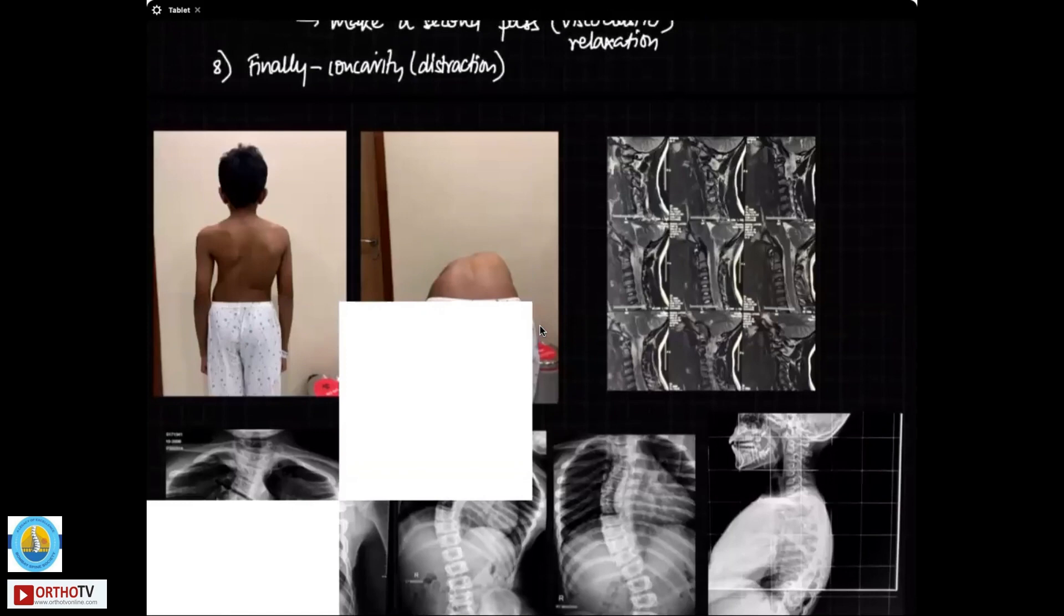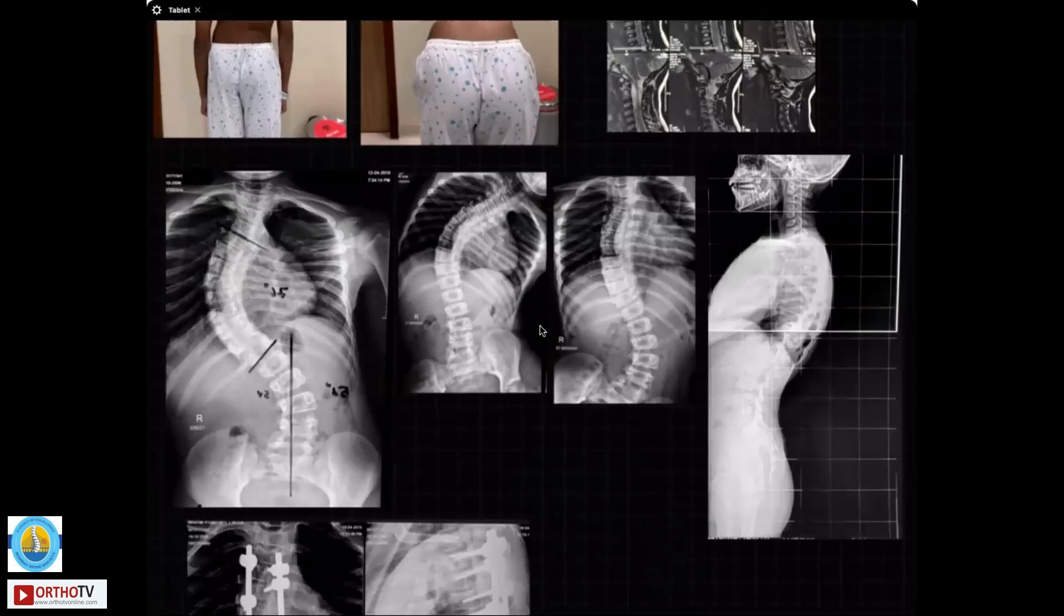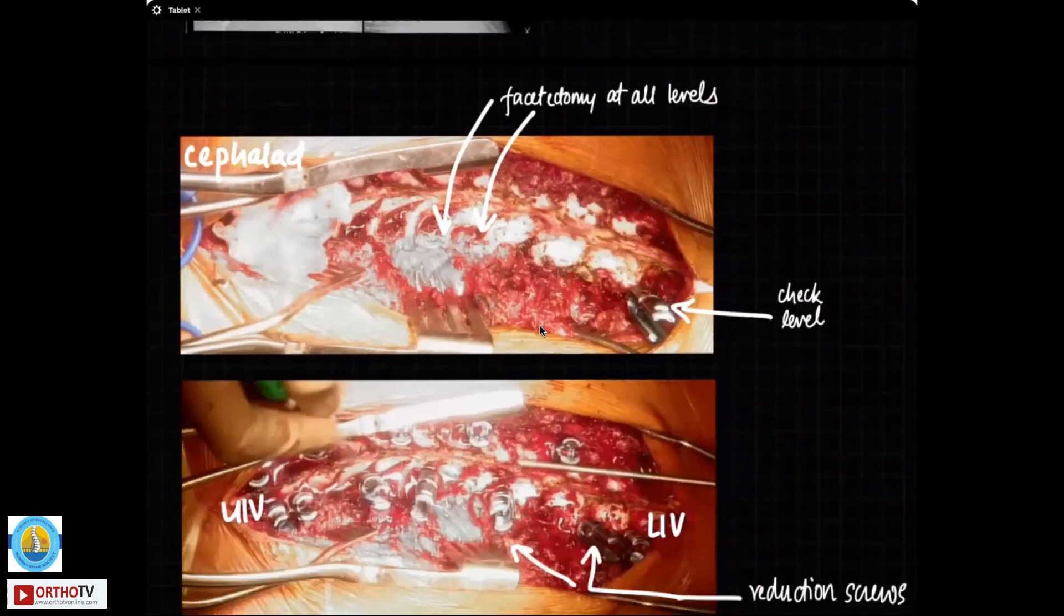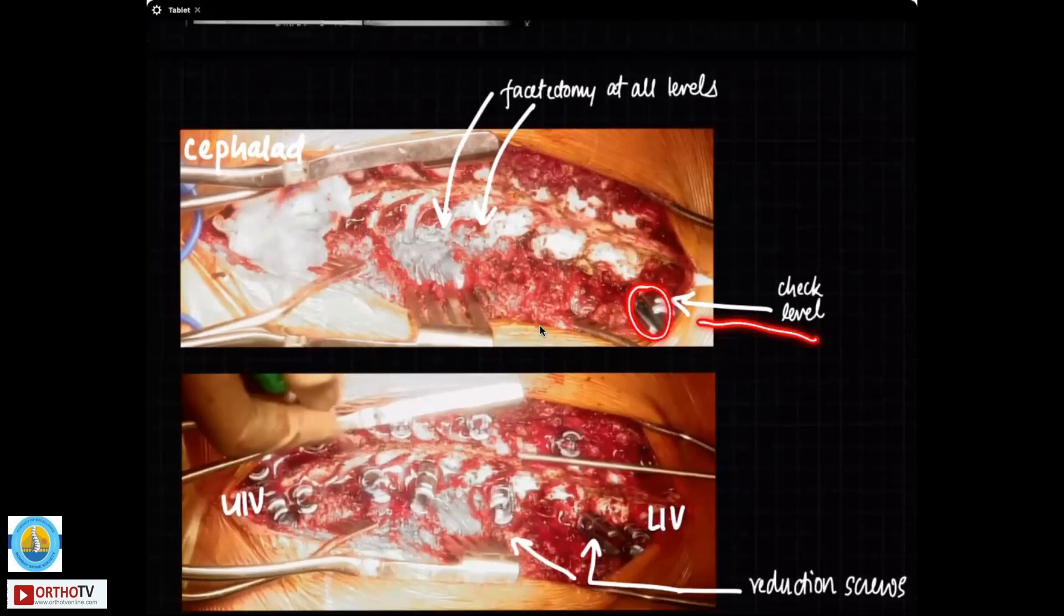This is a scoliosis patient here. That is the curve 76 degrees. So this is the curve that we are going to correct like that. Here you can see that this is the screw here on which I am checking the level and making sure that what my LIV is correct or not. Doing facetectomy at every level to expose the superior facet which helps me put the screws at every level.